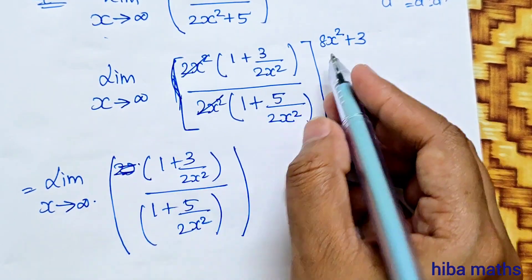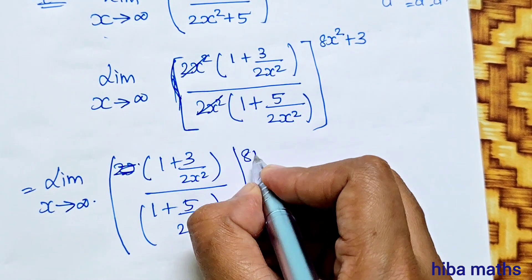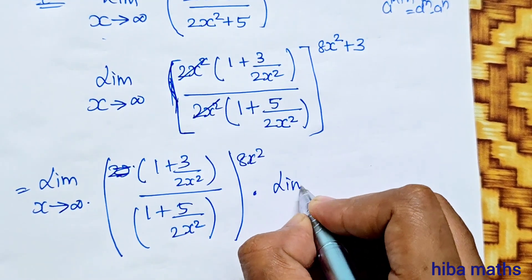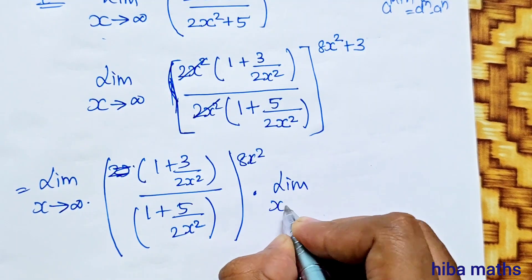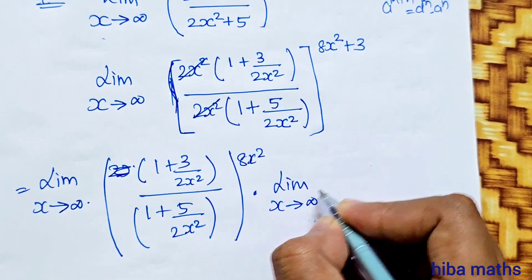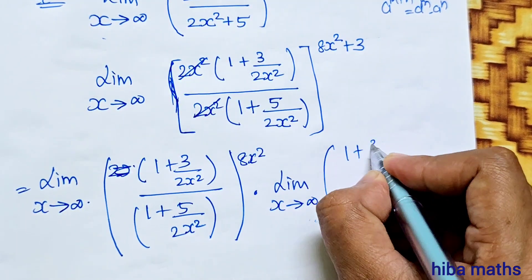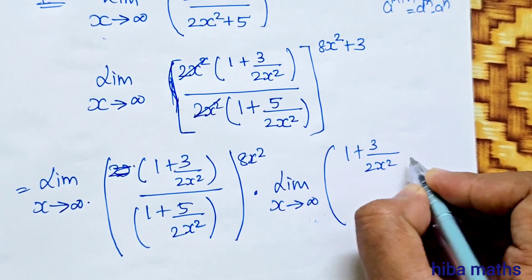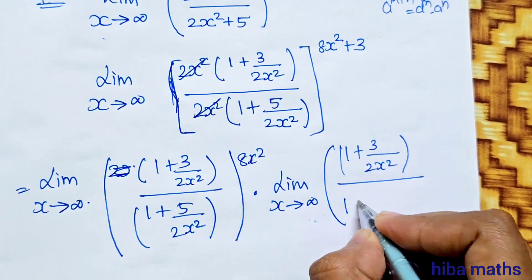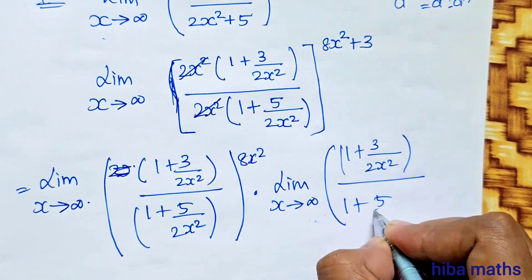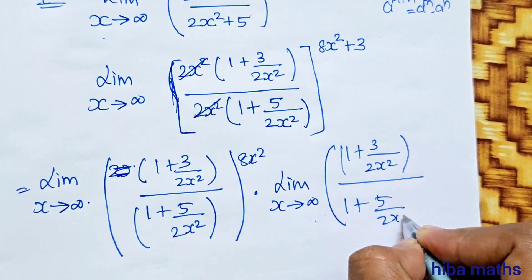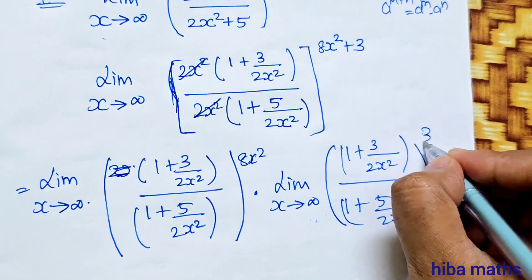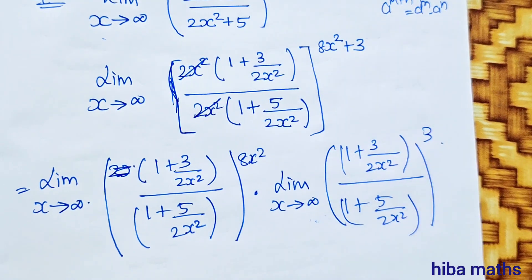1 plus 3 by 2x square divided by 1 plus 5 by 2x square, with power 8x square plus 3. We split the power as a per m into a per n, so the power is split into 8x square and the remaining power of 3.